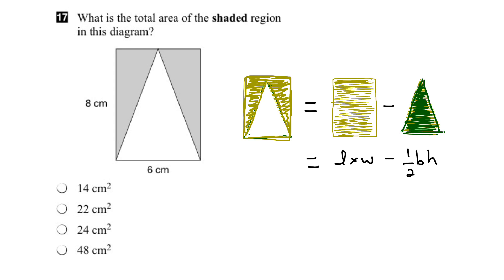So, if I look over at our diagram, we can see the length is eight centimeters, and our width is six centimeters. So, the area of the rectangular part is eight times six.